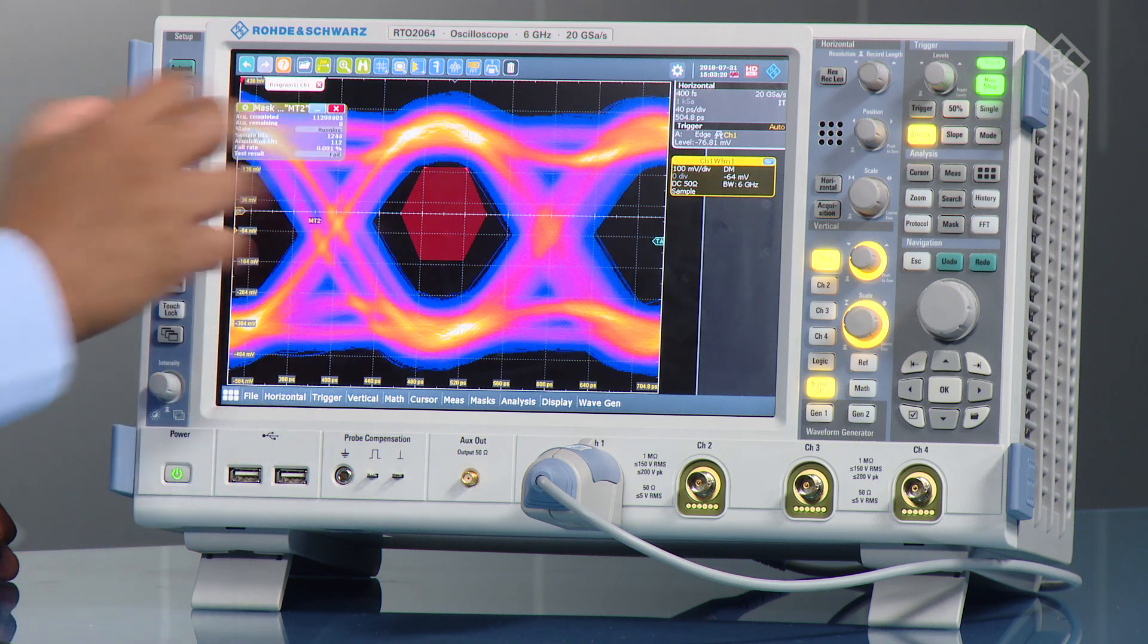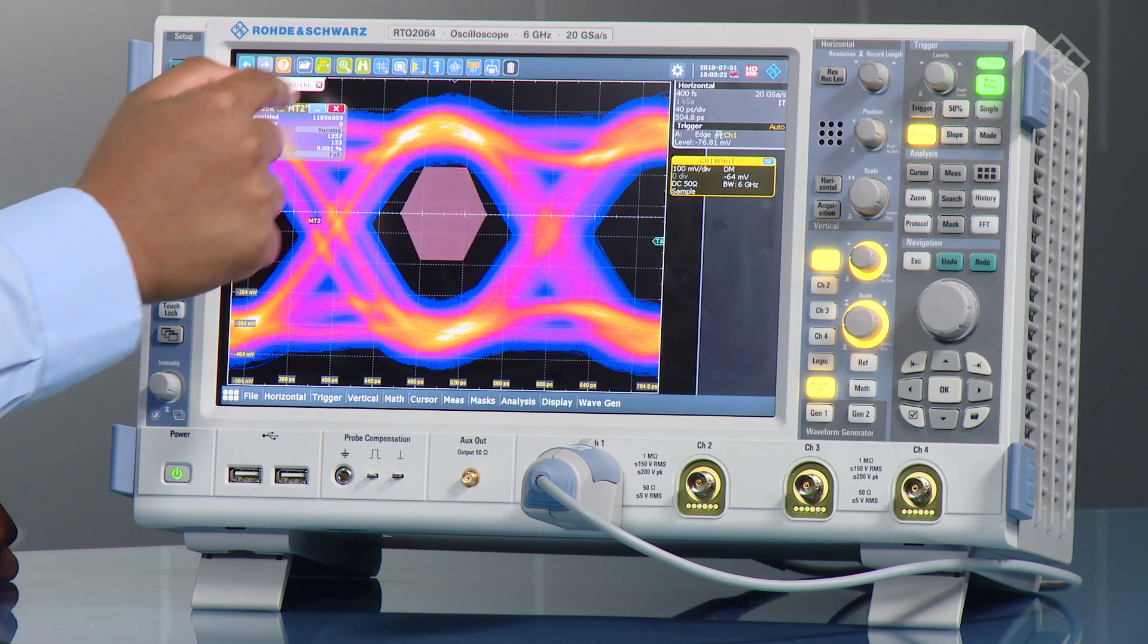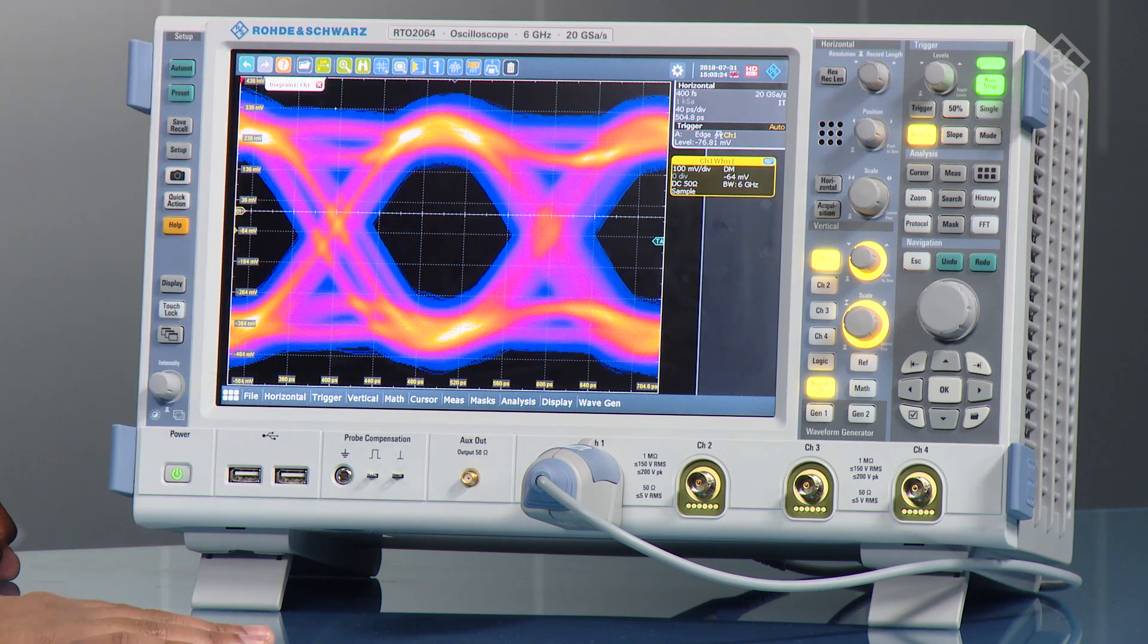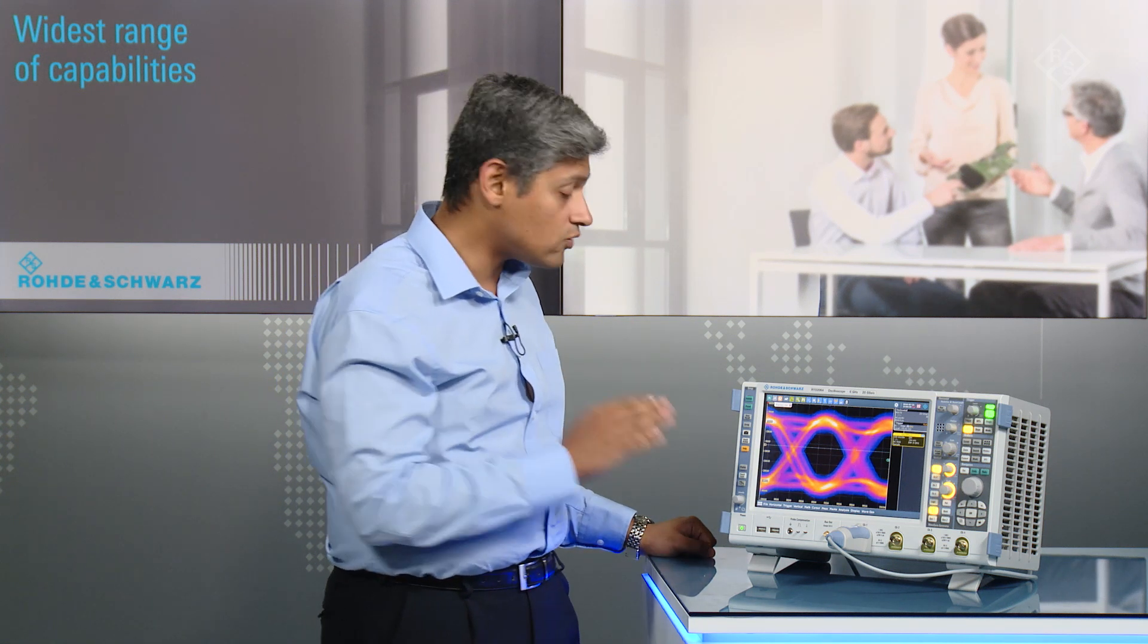So that's the setup you can do to set up the mask. But if you wanted to have a quick check and see what's exactly wrong with your signal or try and find very quickly—not based on any standard or so on—you can do that also with the RTO.